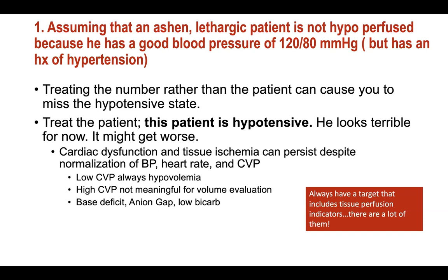I'm going to start with an ashen lethargic patient in the ECC - the emergency care center. Don't assume that he's not hypoperfused because he has a good blood pressure of 120 over 80. If this patient has a history of hypertension, they could be very significantly hypoperfused. Having a mean arterial pressure target is very individualized. The generic philosophy is that a MAP of 65 assures appropriate perfusion, but think about what cost you're achieving that - you may be using very aggressive vasopressor therapy or giving a lot of volume.